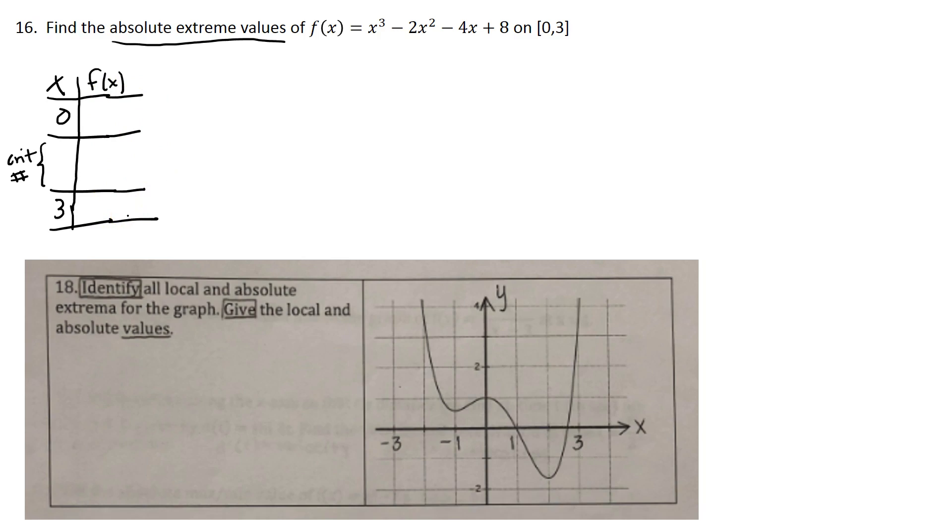Where we find those is by taking the derivative and setting it equal to 0, and seeing possibly where it's equal to 0 or undefined, but with a polynomial it won't be undefined. We have 3x squared minus 4x minus 4 using the power rule and the constant multiple rule. Set this equal to 0 and try to solve.